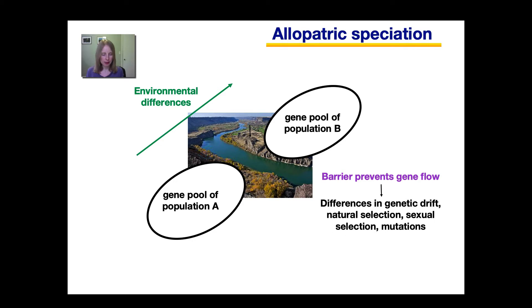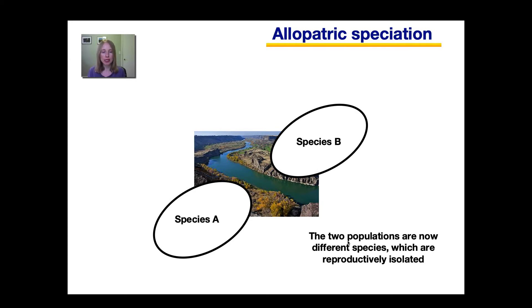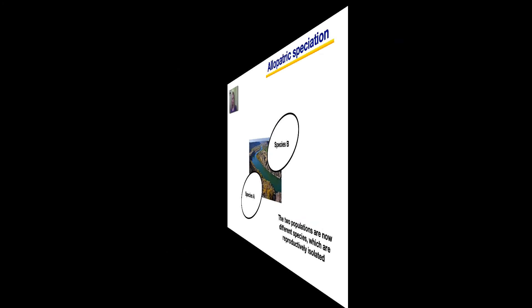As these differences arise, eventually you'll get new reproductive barriers, such as differences in mating songs or differences in the timing of the breeding season. Gradually, once they are reproductively isolated, the two populations are now different species. So now that they are species A and species B, based on the biological species concept, if we carried individuals from species B across the river, they would still not mate with species A, even if they came in contact.